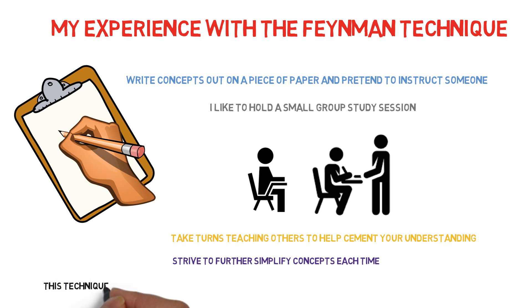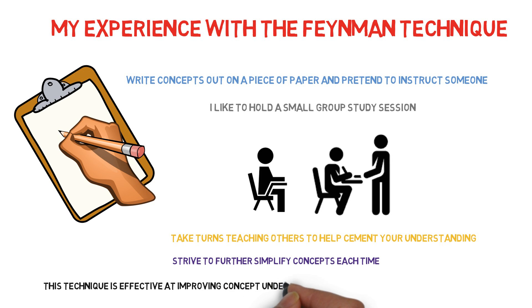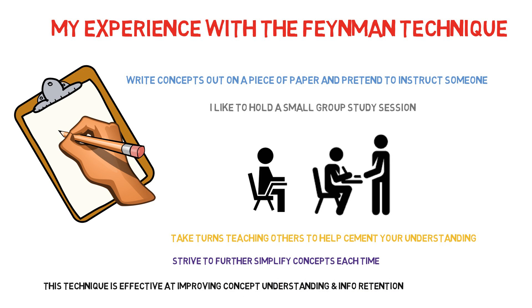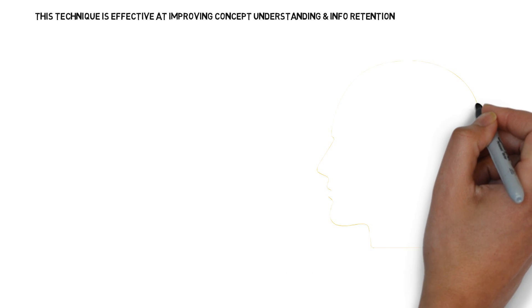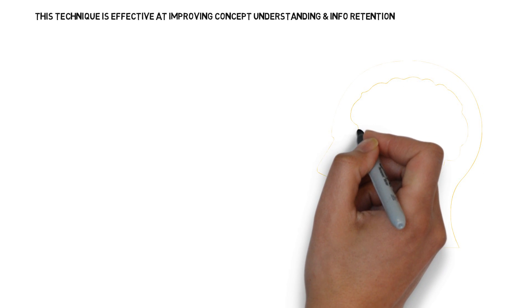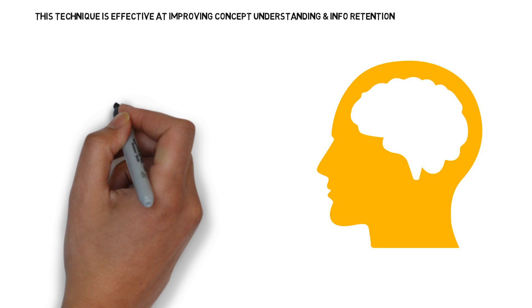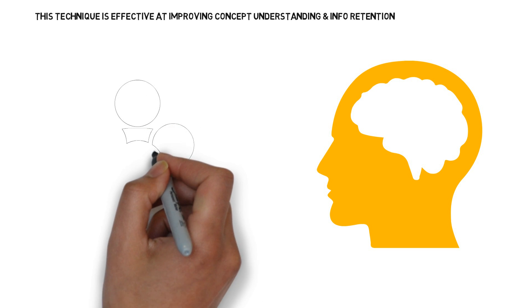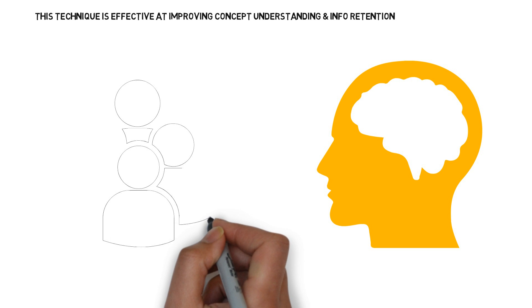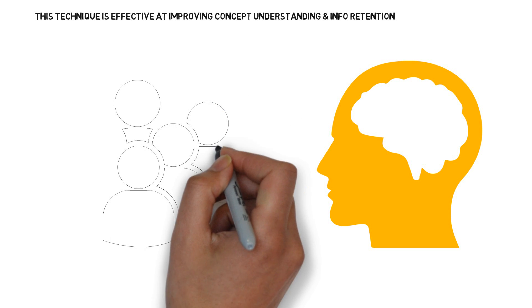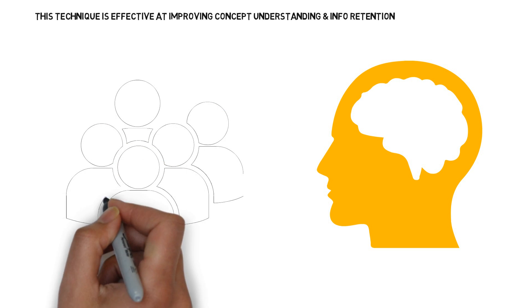The act of simplifying difficult concepts using the Feynman technique helps a great deal with understanding and information retention. But the sensory stimulation and emotional responses of explaining to your friends in real-time in a small group setting takes it to the next level. Studying alone with a piece of paper is just not as memorable as explaining the concept to others when their eyes are on you. After I had mastered a concept by teaching my friends, I would not have to study it again for the exam.